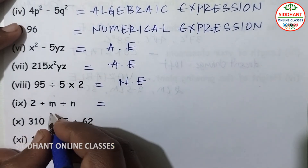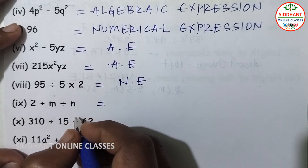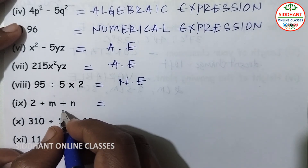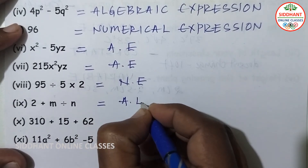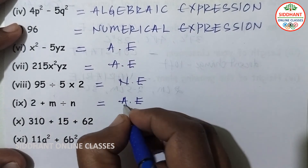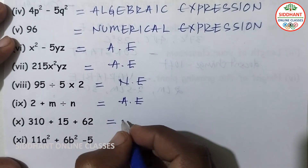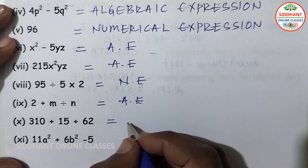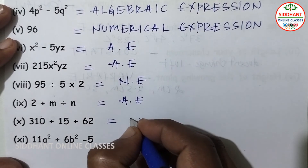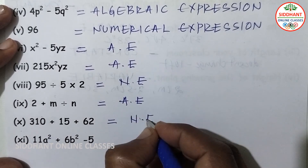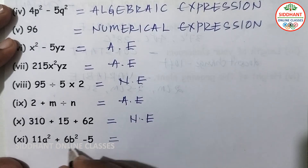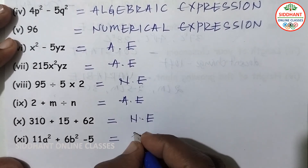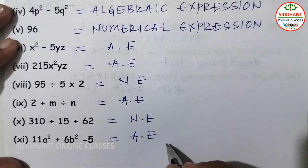Ninth — 2 plus m divided by n — has variables and constants, so it is an algebraic expression. Tenth — 10 plus 15 plus 62 — all numbers, so it is a numerical expression. Eleventh — 11a square plus 6b square minus 5 — has variables, so it is an algebraic expression.